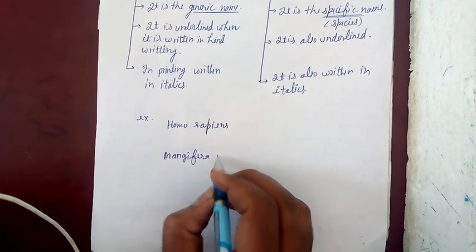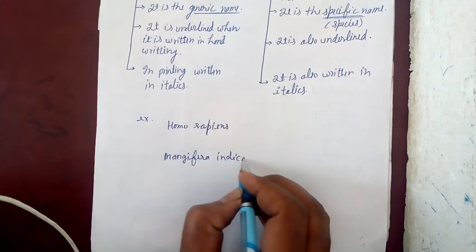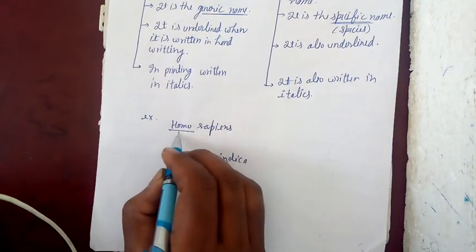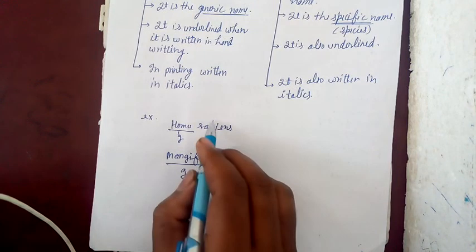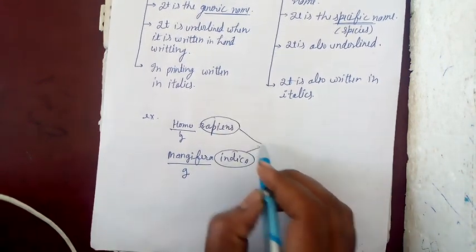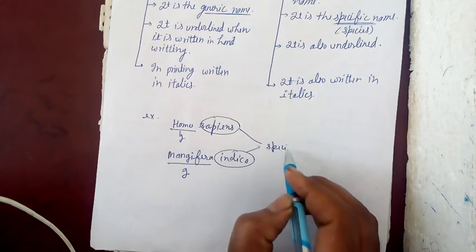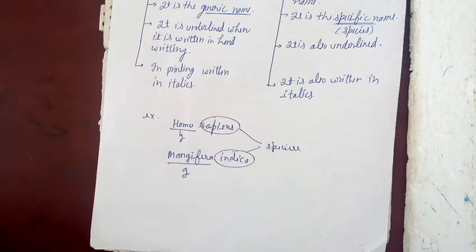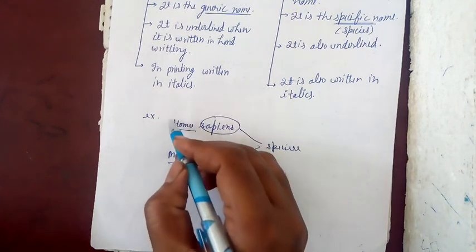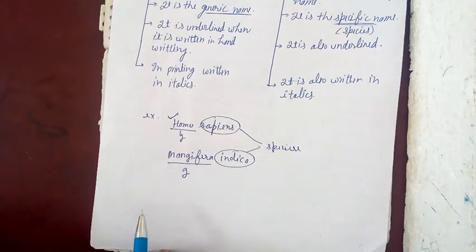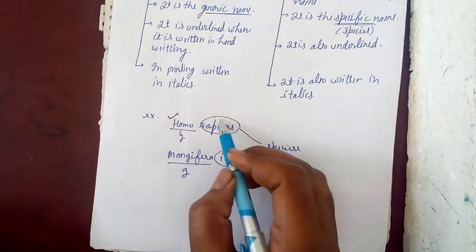For example, Mangifera indica for mango, and Homo sapiens for humans. Mangifera is the genus and indica is the species. Homo is the genus and sapiens is the species.